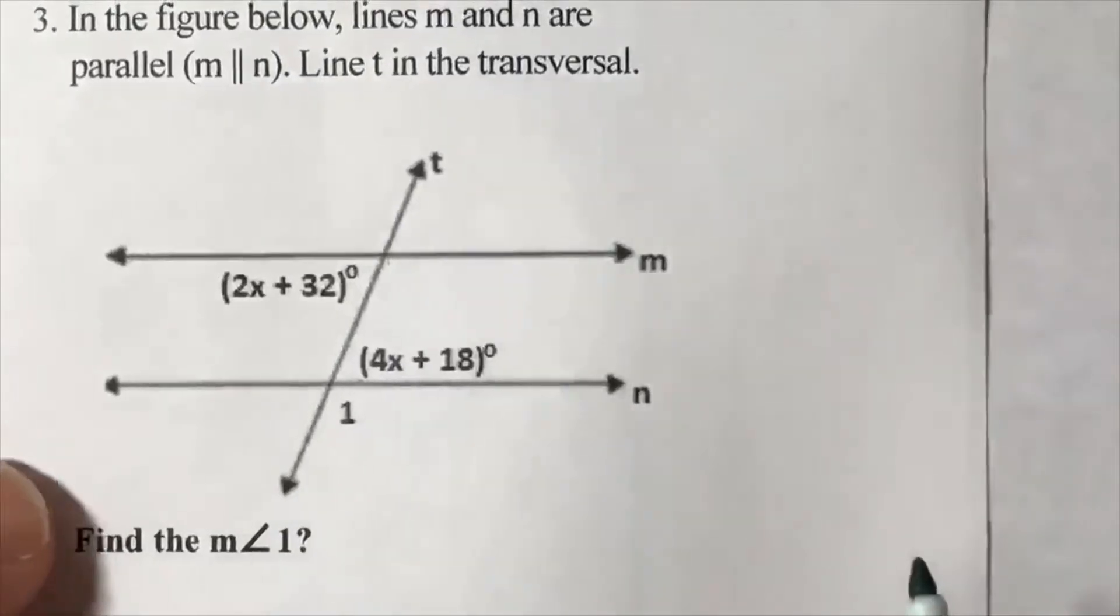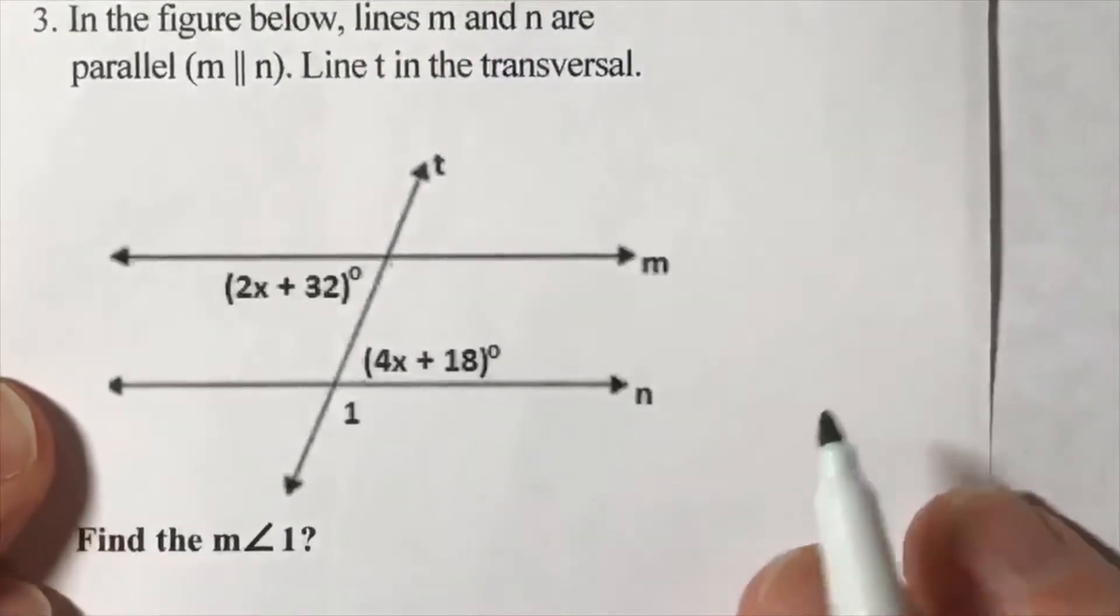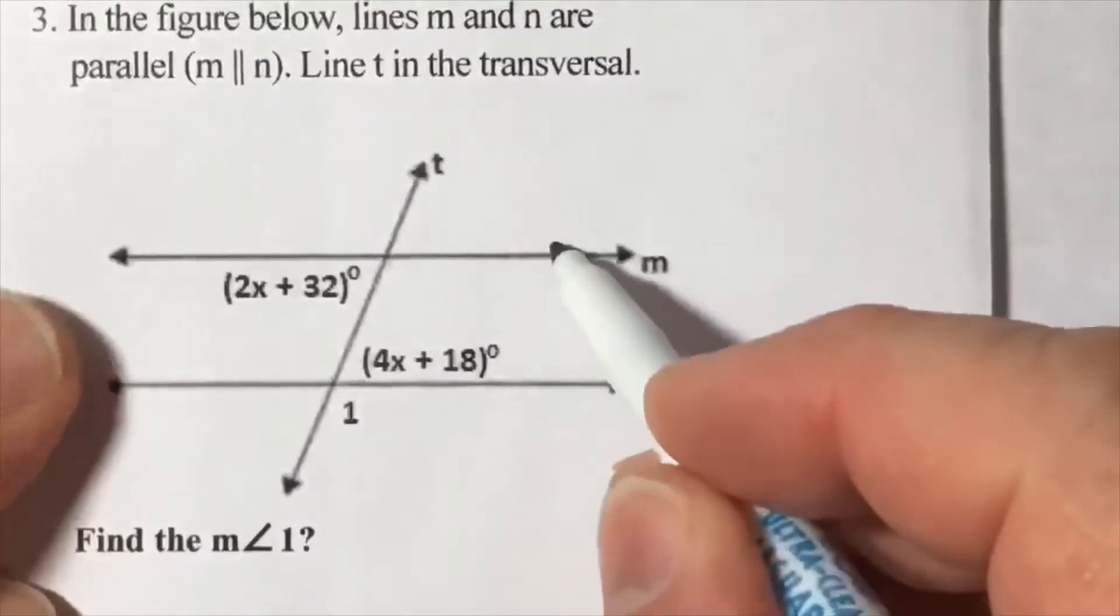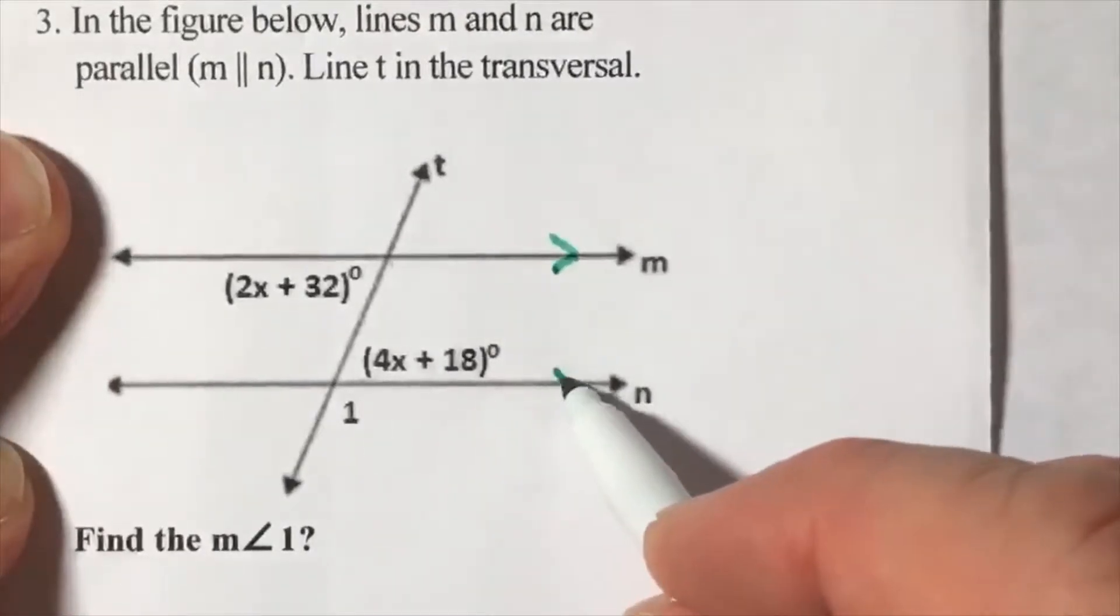In the figure below, lines m and n are parallel, line t is a transversal. So we can go ahead and remind ourselves these lines are parallel while drawing in these little arrows.